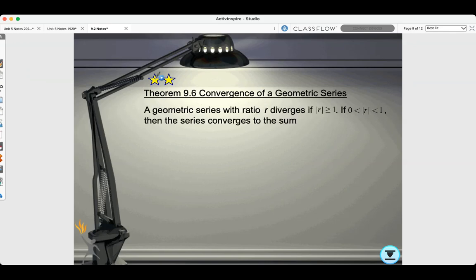A geometric series with ratio r diverges if the absolute value of r is greater than or equal to 1. If the absolute value of r is between 0 and 1, then the series converges to the sum a over 1 minus r.